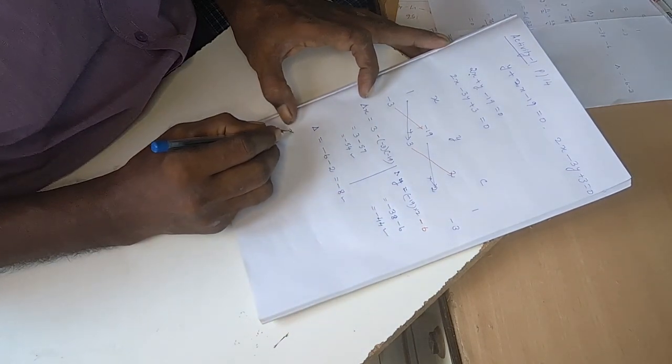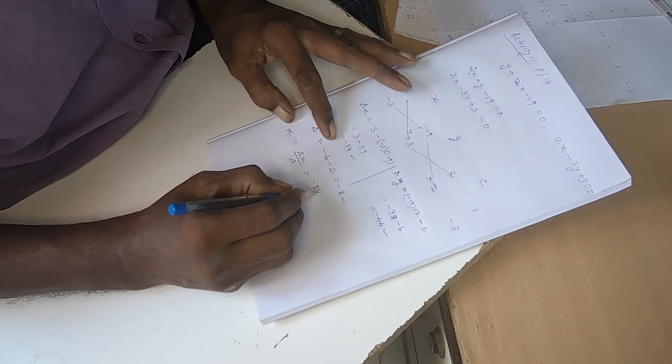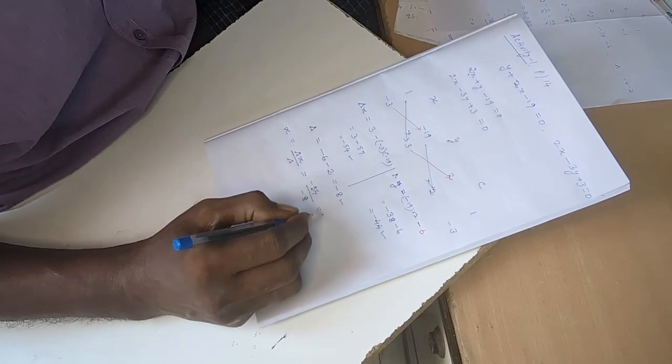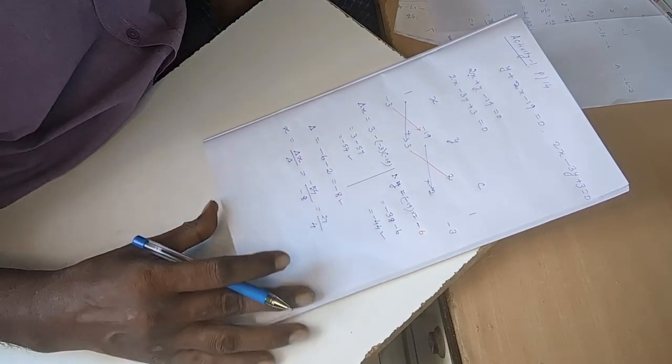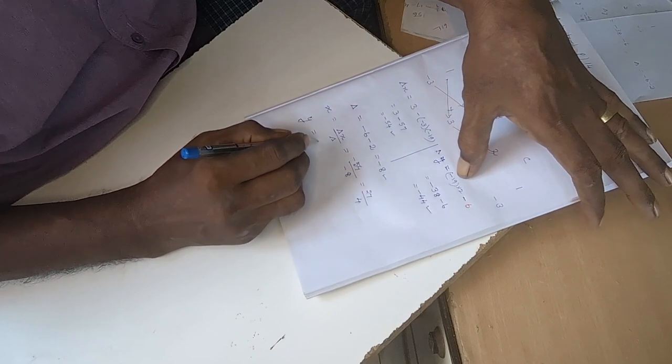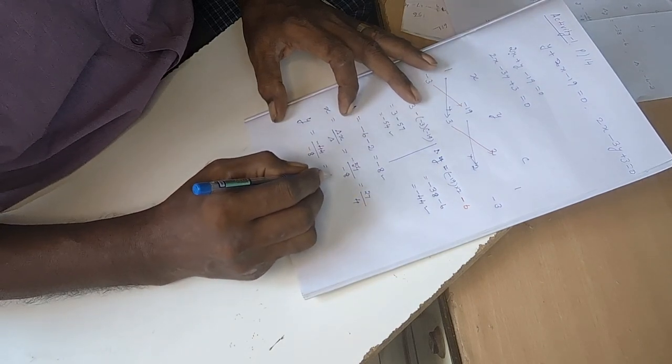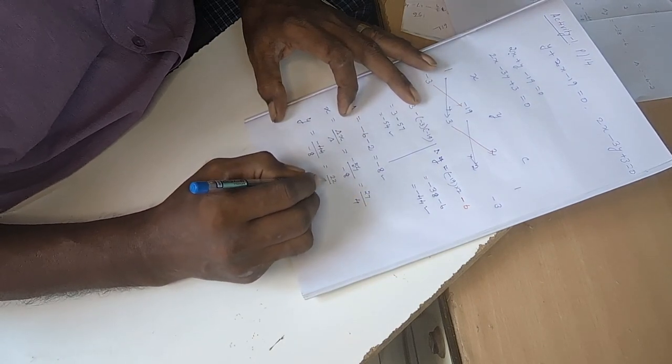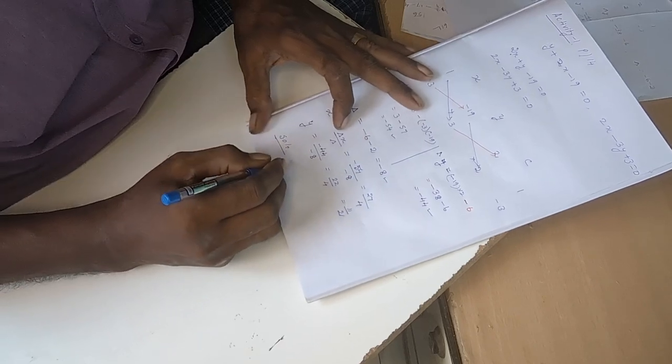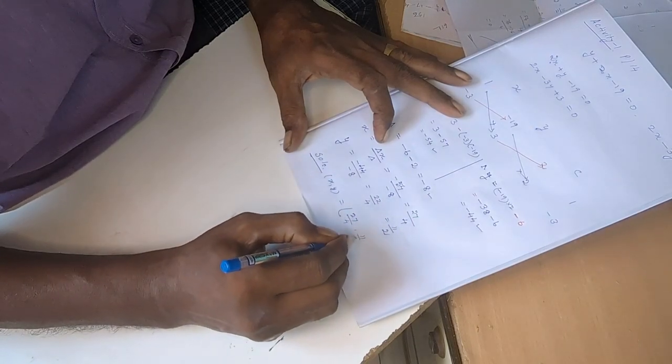So now x value is delta x by delta. Delta x is minus 54 by minus 8. Both minus cancel, so x equals 27 by 4. And y equals minus 44 by minus 8, which is 22 by 4 or 11 by 2. The solution is x, y equal to 27 by 4, 11 by 2.